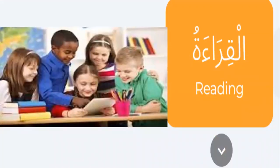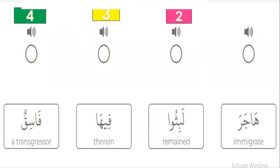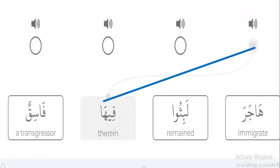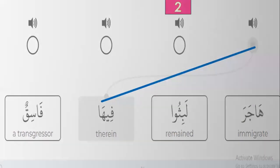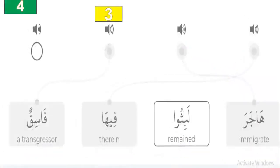Now I will test your reading. Please match between the sound and the right word. Number one — listen: FIHA. What is FIHA? Yes, it's the third one, FIHA. Good. Number two — it's FIHA. Good. Number three — FIHA. What is FIHA? Good, yes FIHA. Number four — LABISU. LABISU. Where is LABISU? Yes, LABISU is the second one. It's LABISU. Okay, good.